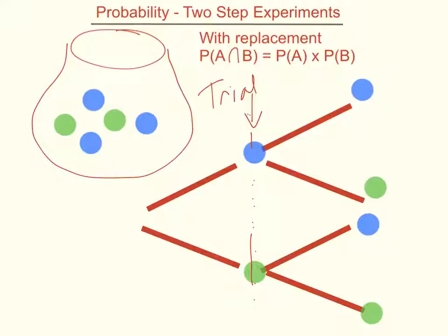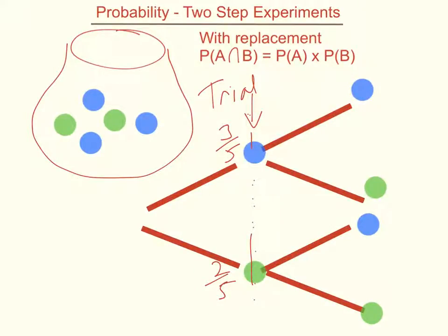If we were to work out the probabilities of those outcomes, we need to give probabilities to each of the different trials. Looking at the first trial: there are five beads, so the chance of getting a blue is three out of five, and the chance of getting a green is two out of five. Notice that three fifths and two fifths adds up to one — five fifths.